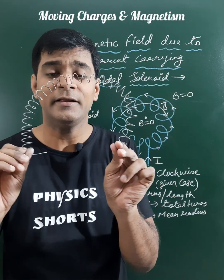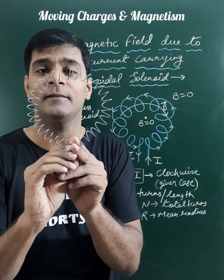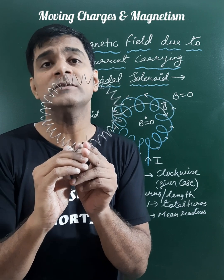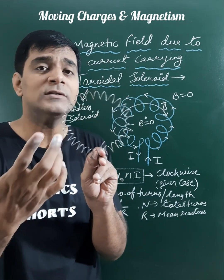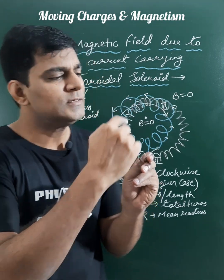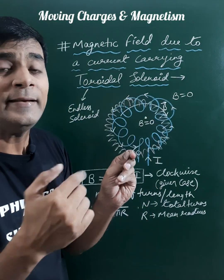When a straight solenoid is bent in the form of a circular ring, it forms a toroidal solenoid, and the magnetic field inside this current carrying toroidal solenoid is also uniform. We can say this toroidal solenoid is an endless solenoid.